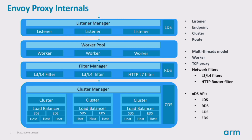Besides these, there are HTTP L7 filters, which we have talked about before. After all the filters have finished their tasks, the request can be routed to a specific cluster. After that, the load balancer takes effect and chooses a suitable, healthy endpoint. At this step, the request's journey is complete.